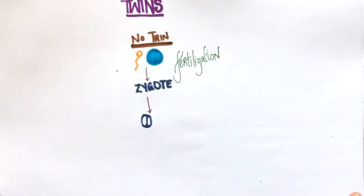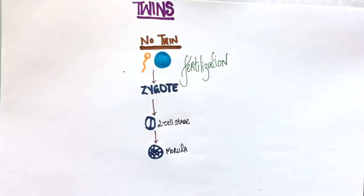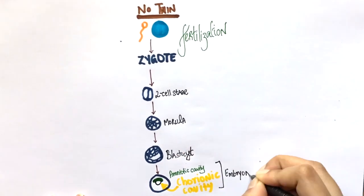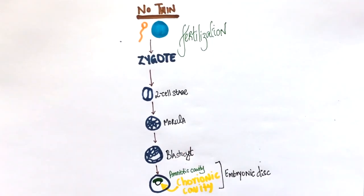The zygote grows to give rise to a morula which then forms the blastocyst and gets implanted. The blastocyst forms the amniotic cavity and the chorionic cavity which is collectively known as the embryonic disc.